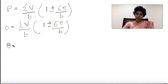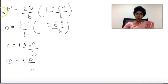Setting the minimum stress to zero: 0 equals 1 minus 6e by b. Solving this gives e equals b by 6.